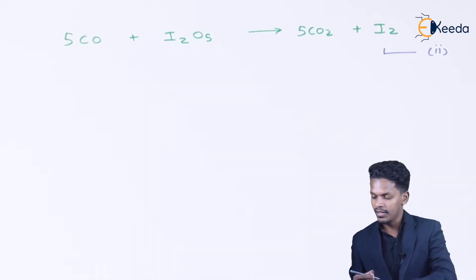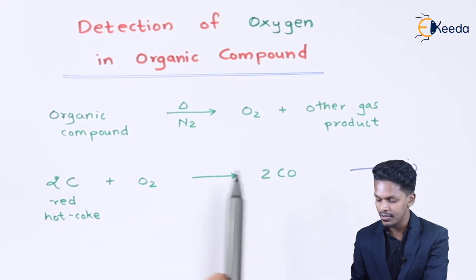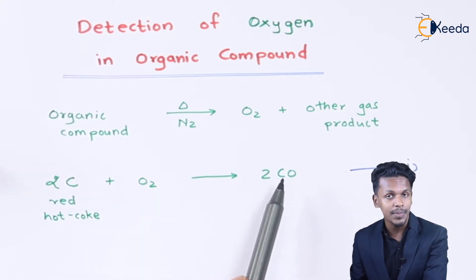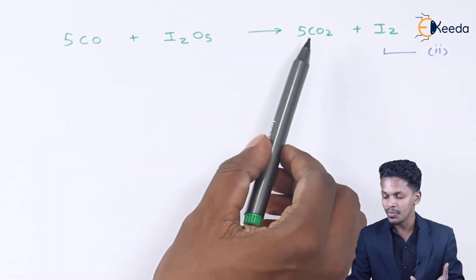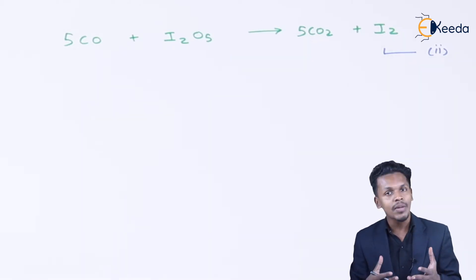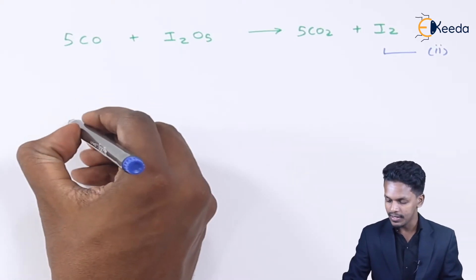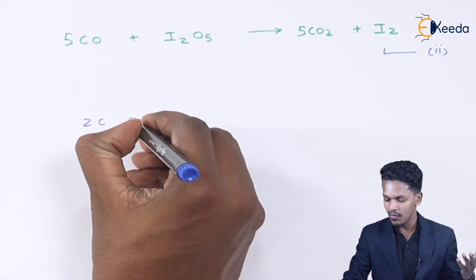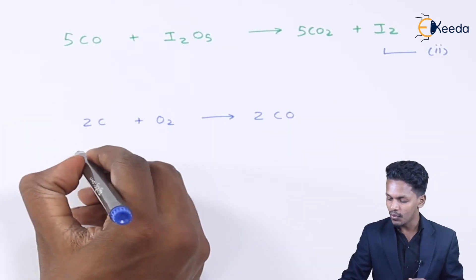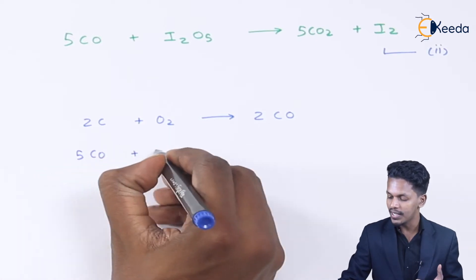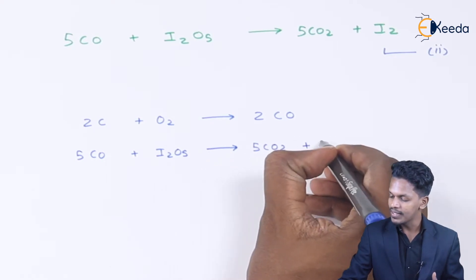If you observe Equation 1, the carbon monoxide produced by reacting oxygen with carbon is directly treated with I₂O₅ — iodine pentoxide — to produce carbon dioxide. These two equations are related to each other. In Equation 1, 2 moles of carbon monoxide are produced, while in Equation 2, 5 moles of carbon monoxide are used.